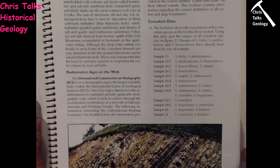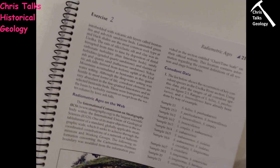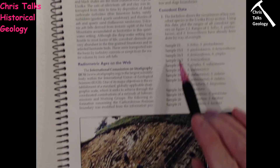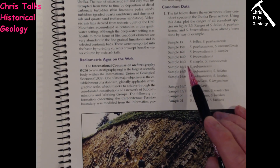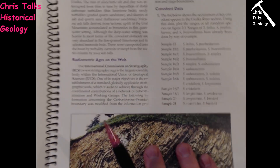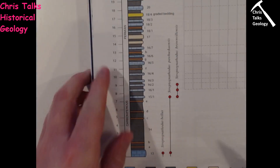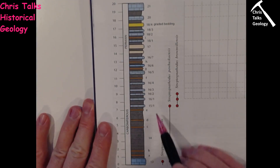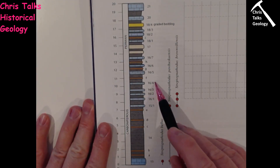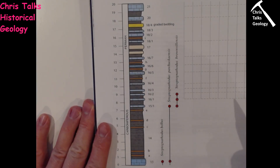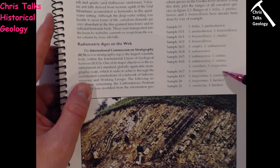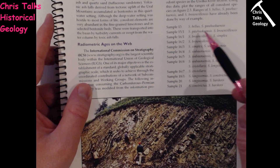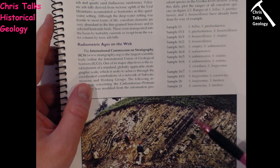So what we're going to do is we're going to plot fossil evidence from layers of rock from that sequence onto the diagram. So you'll notice that for each sample — 13, 15-1, 16-1, 16-2, 16-3, 16-4 — those are the sample numbers, and if we come over to the diagram, you'll see there they are again. For each of these samples there is a set of different fossils listed.